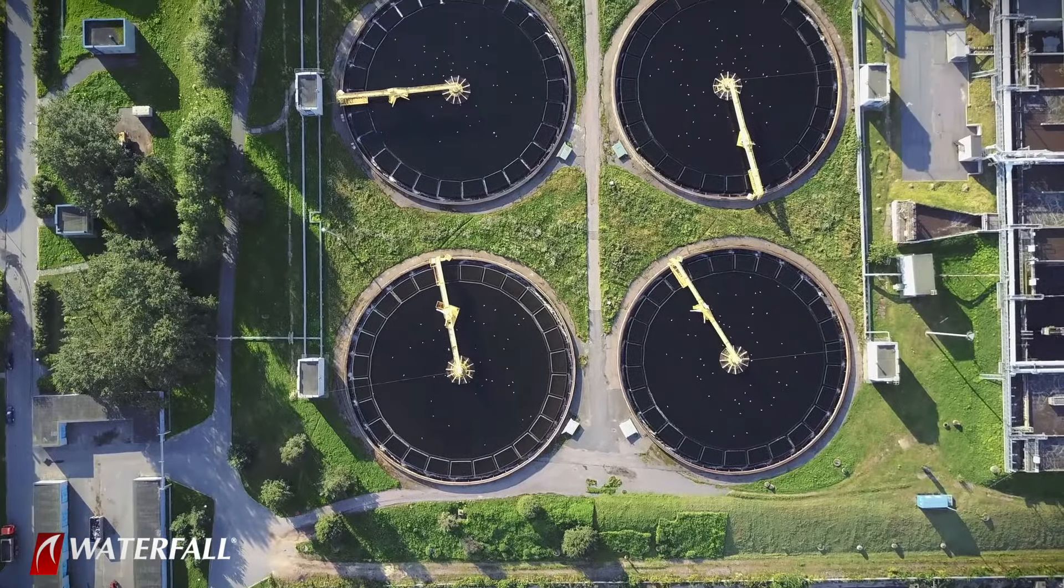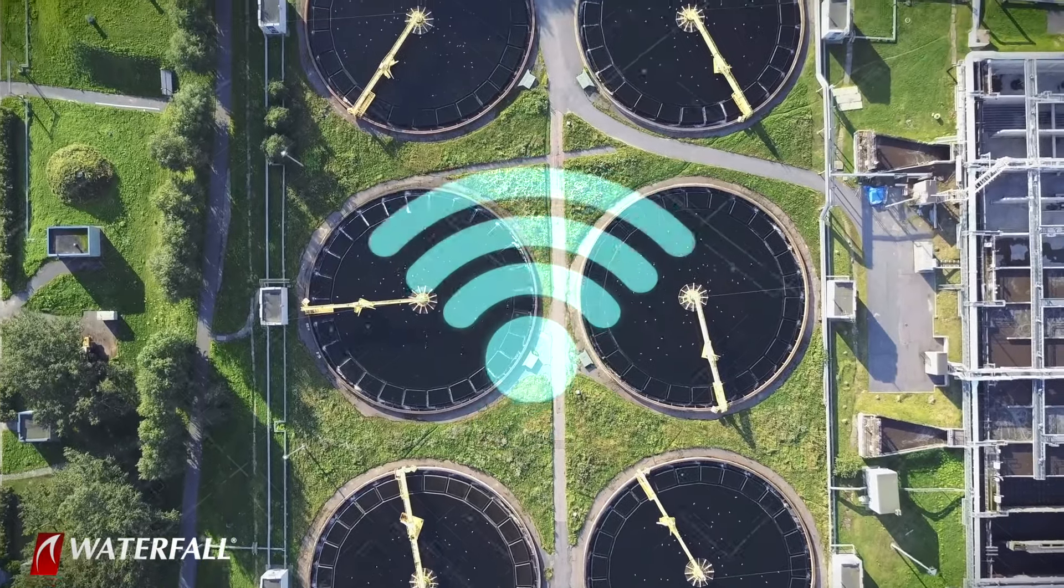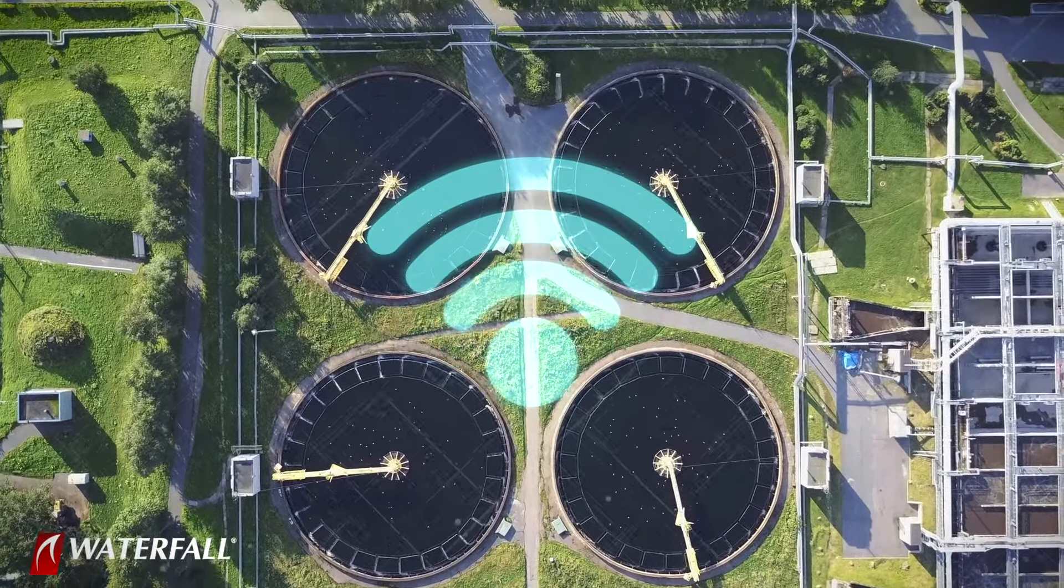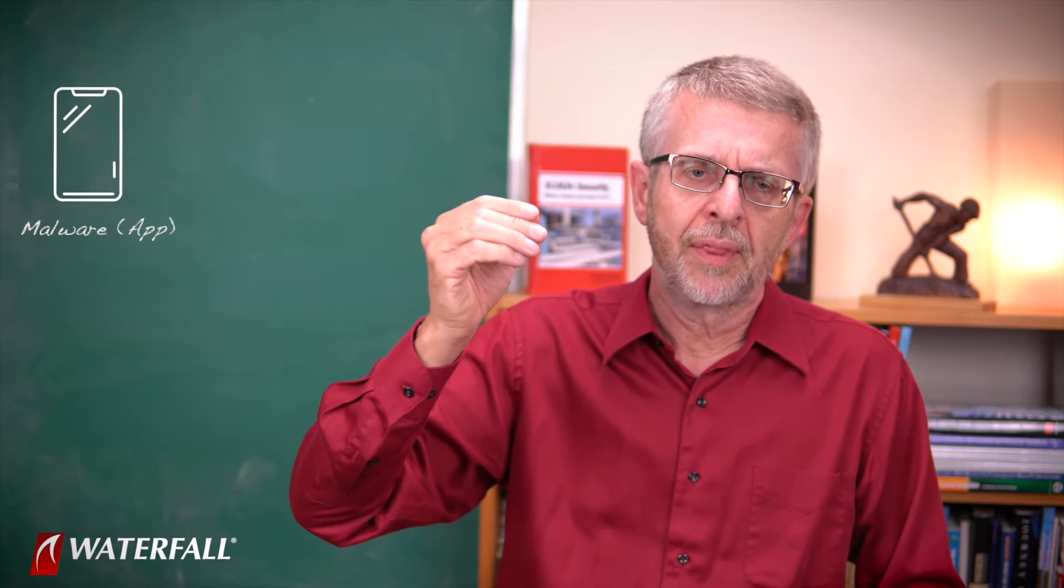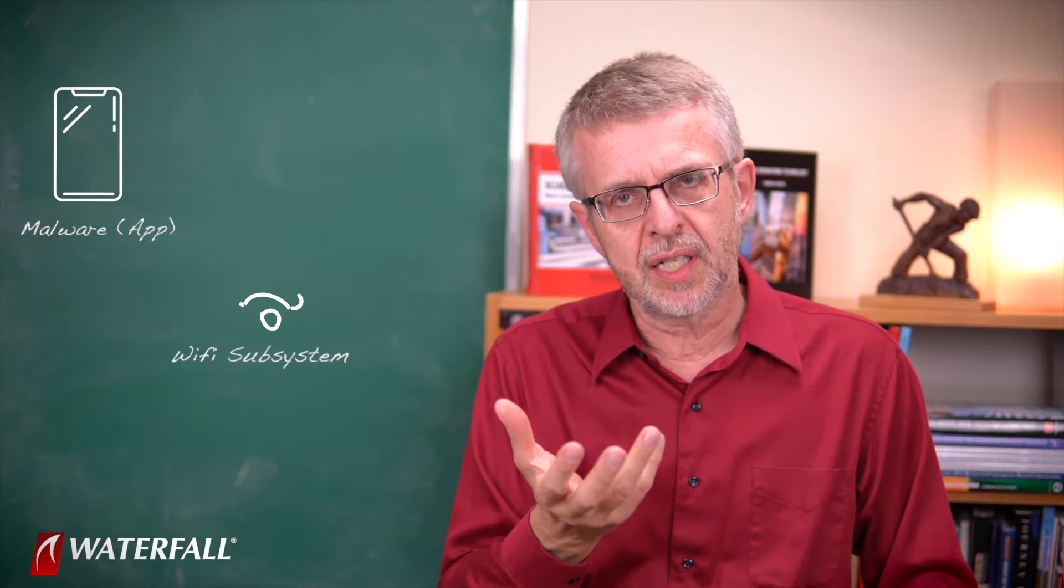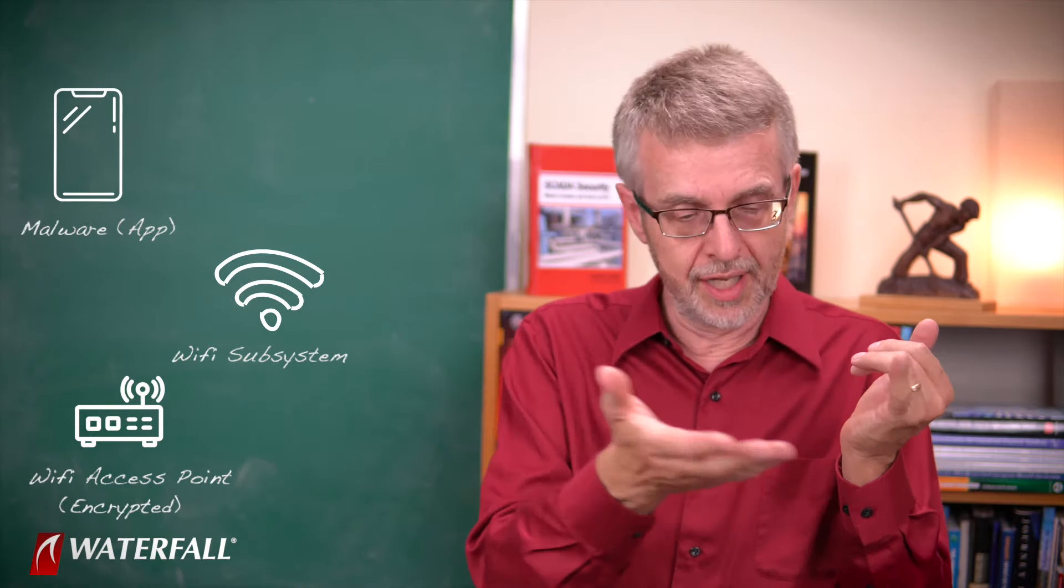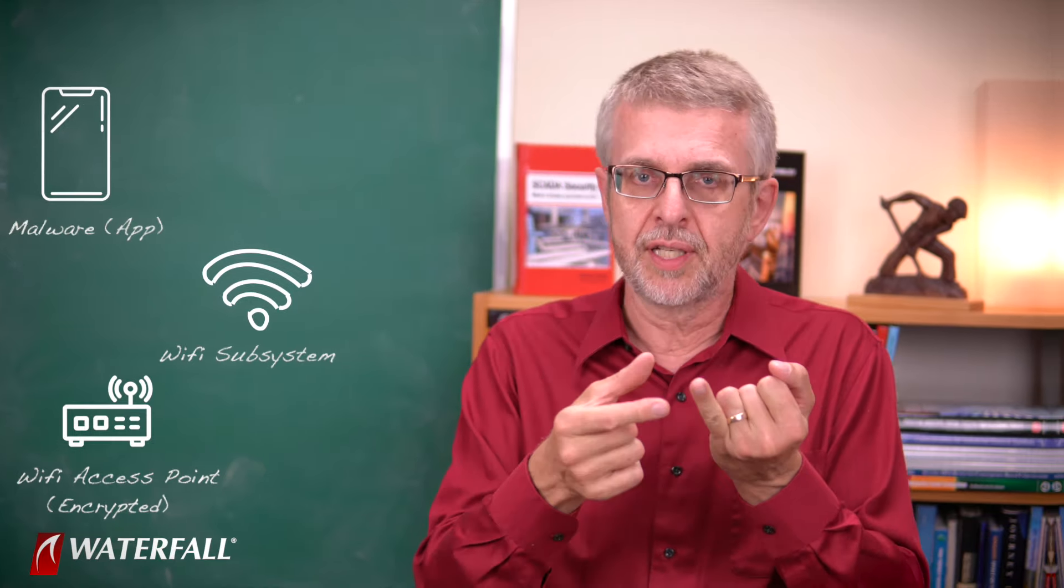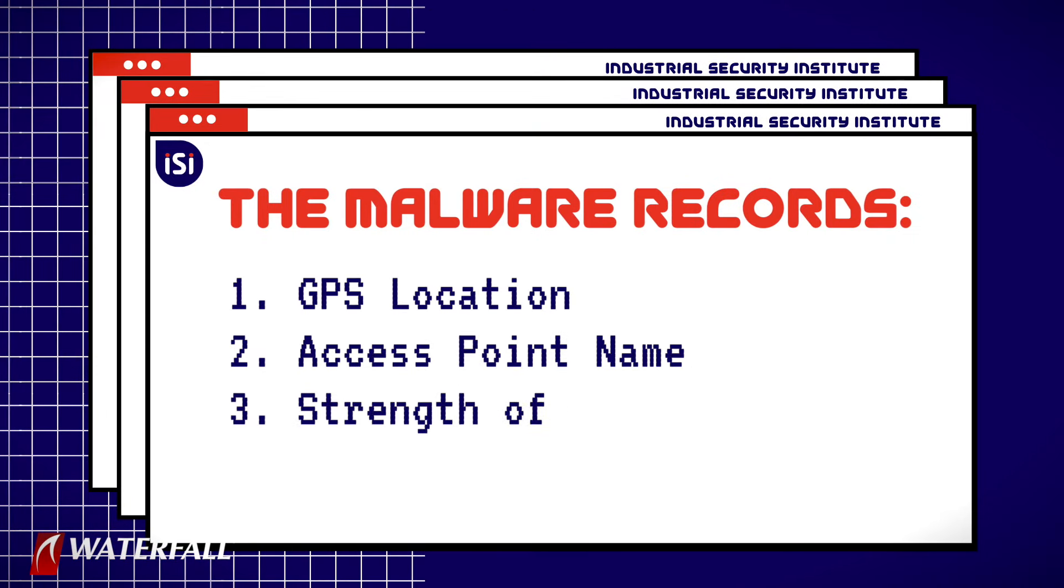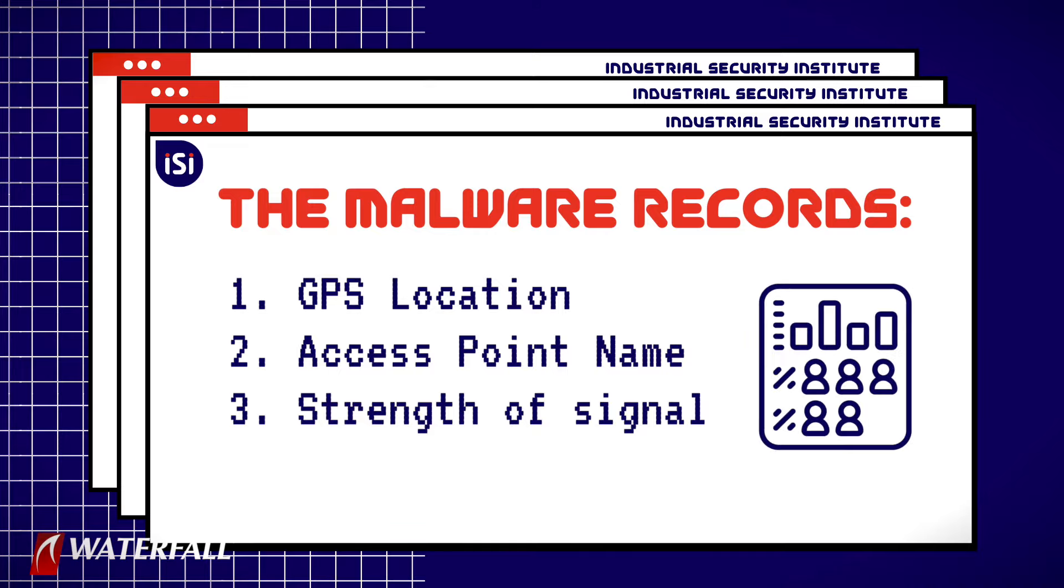Now, most industrial sites, even if they use encrypted Wi-Fi, we're talking best practice 2013 vintage. Nobody is going to connect their cell phones to industrial control system Wi-Fi access points. That makes no sense. So when these cell phones are walking around an industrial site, they still have a cell signal. They're still connected to the Internet, but they're not using the Wi-Fi. And so the malware, the fake app, can use the Wi-Fi hardware, the Wi-Fi subsystem, to scan for Wi-Fi access points. And when it finds Wi-Fi access points, presumably all of which are encrypted, that's 2013 best practice, when it finds these access points, it records the GPS location, the access point name, and the strength of signal. And it sends to a command and control center on the Internet.